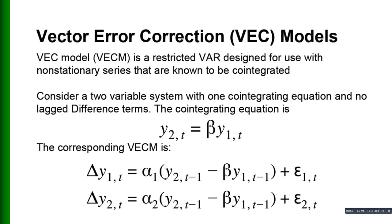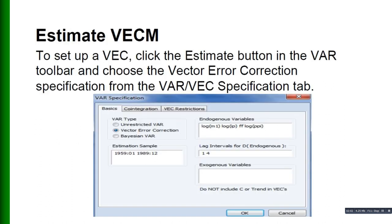In order to estimate the VECM, we will click on the Estimate button in the VAR toolbar and choose the Vector Error Correction specification from the VAR/VEC specification tab. As you see here, in the VAR specification we have checked Vector Error Correction, and then we will write our equations and series here, use lag intervals, and then press OK.